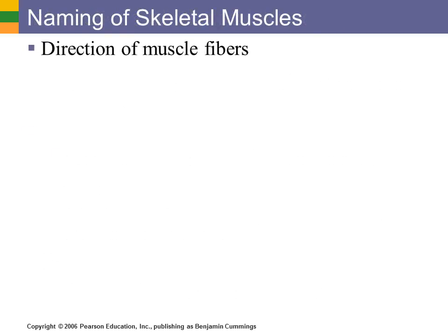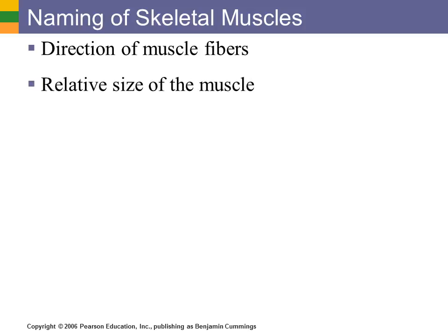As we start exploring names of muscles, here are a few short tips about how muscles are named and some Latin terms that will help you identify them. Some muscles are named by the direction the fibers run — for example, the rectus femoris. Rectus means straight, so rectus femoris refers to the straight muscle fibers of the femoral area. Another term describes the relative size of the muscle — for example, if it's large, you might say maximus, like gluteus maximus.